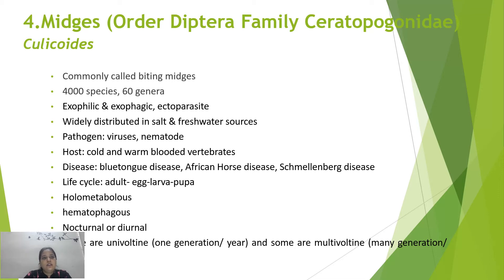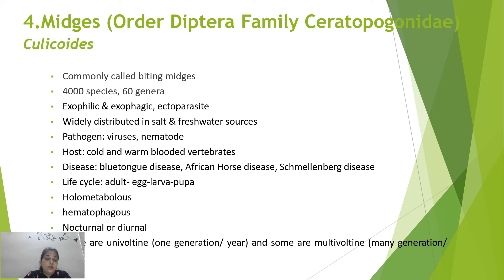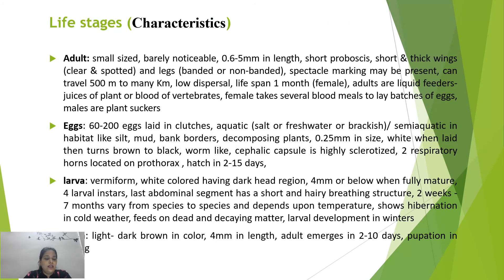The next vector is midges, belonging to order Diptera and family Ceratopogonidae, genus Culicoides, commonly called biting midges. There are 4,000 species across 60 genera. They are exophilic and exophagic, ectoparasitic, and widely distributed in salt and fresh water sources. They transfer viruses and nematodes to cold and warm-blooded vertebrates, causing diseases like bluetongue disease and African horse disease. They are hematophagous and may be nocturnal or diurnal, completing one generation per year (univoltine) or many generations (multivoltine).